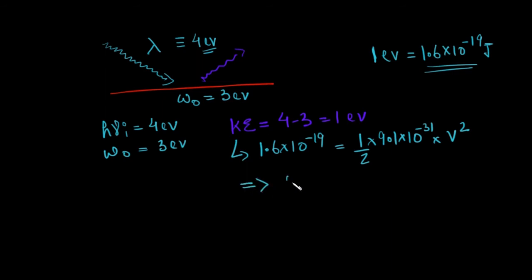Using this, I can figure out the velocity with which these electrons can escape. So we can find this. So you can try this out and you can figure out the velocity of the escaping electrons from this.